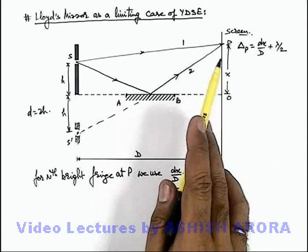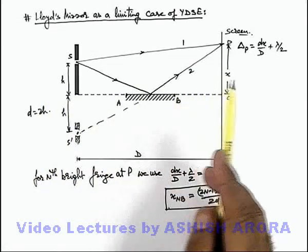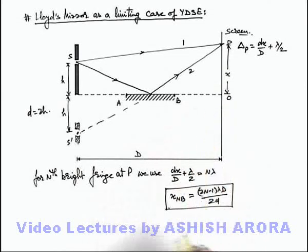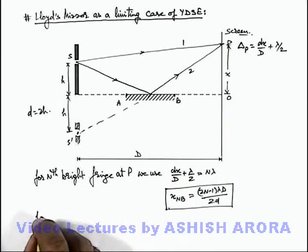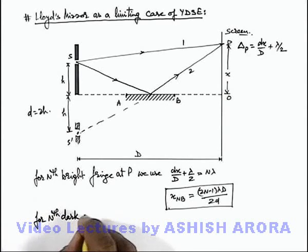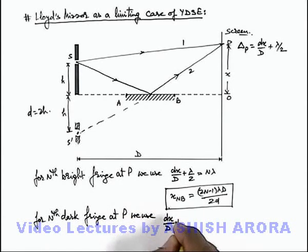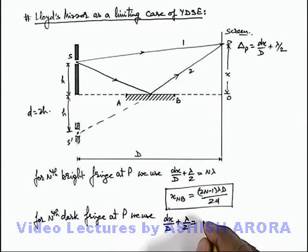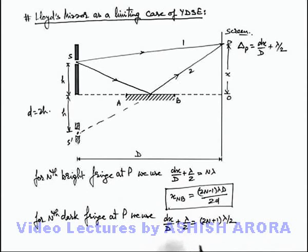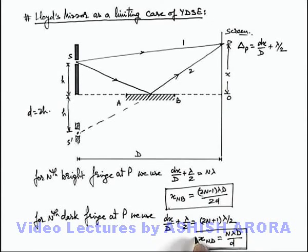So here you can see the pattern obtained on screen due to the Lloyd's mirror setup is inverse of the pattern of actual YDSE setup. For the nth dark fringe at point P, we use the path difference: dx/D + λ/2 = (2n+1)λ/2. Here λ/2 cancels out, and on simplifying we get x_nD, the distance of the nth dark fringe from the center of the screen, as nλD/d — which is the result used for bright fringes in actual YDSE.